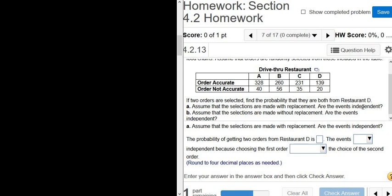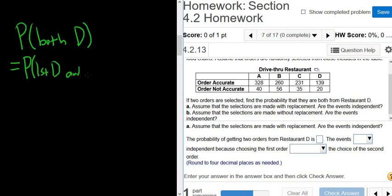So we want both orders to be from restaurant D, so let's write that down. They're both from restaurant D. If they're both from restaurant D, that means that the first one is from restaurant D, and the second one is also from restaurant D.